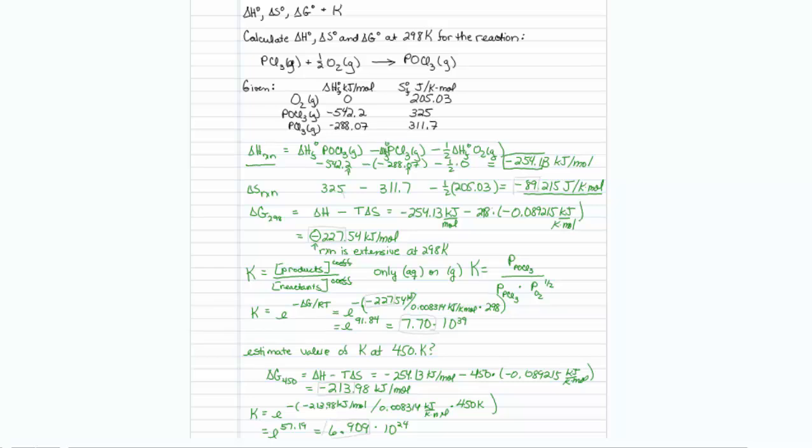Looking at my delta S value, that appears to have the least accurate value at the integer, so that belongs there. Now when I multiply this out, I am subtracting a slightly smaller number, but it is only good to the integer level. So technically my delta G is only also good to the integer level for here and also for here, so I should round that up to minus 214 and this up to minus 228.